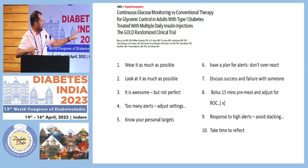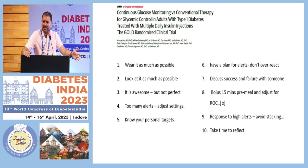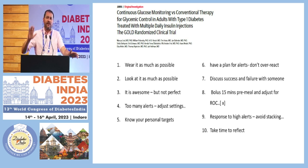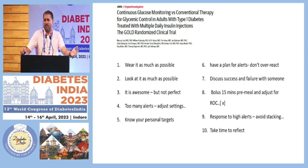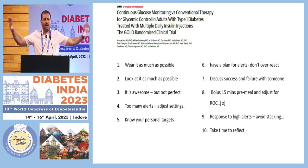If you're using routine CGM, wear it as much as possible and look at it as much as possible — there's very good evidence that people who look at it more have better outcomes. It's awesome but not perfect. People wearing CGM have 0.5 to 1% lower HbA1c than people who don't wear it 70% of the time. There are times when it's not working, but in the big picture it's getting you there.